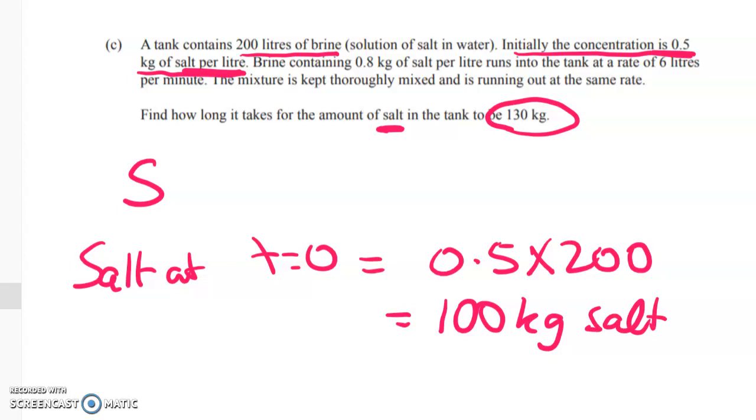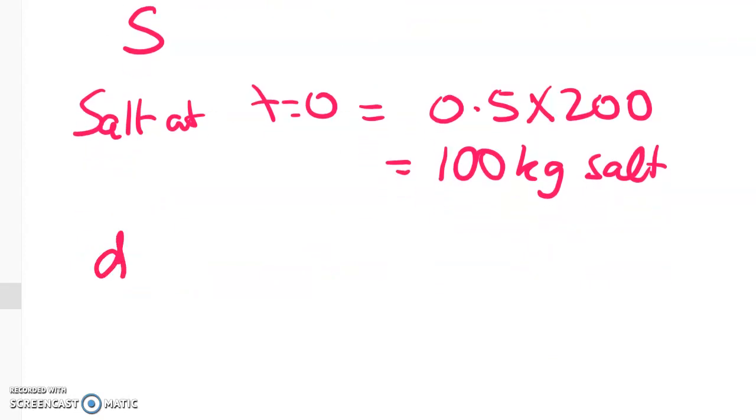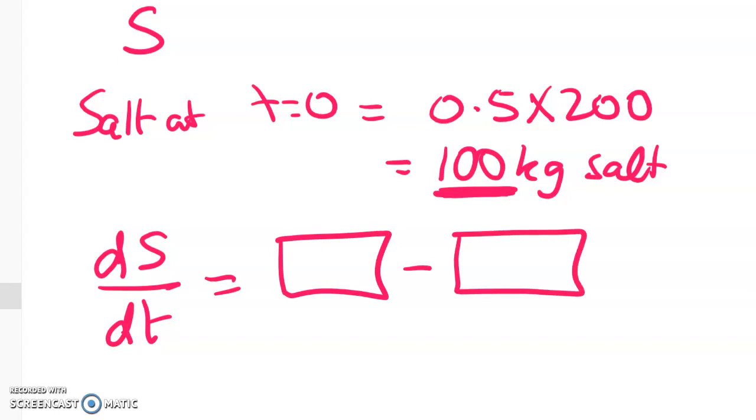Well, the brine is coming in at 6 litres per minute, and it's got a higher concentration of salt, but it's also going out at the same rate. Now, the stuff going out is going out from the whole tank, right? So we're trying to get an amount of salt. When is the amount of salt equal to 130 kilograms? And we can see that it started at 100. So the salt is going to go up over time, and we're solving for time. So we need to set up a DE, and it's going to be dS by dt, and it's going to have two bits. It's going to have a part for the salt coming in, and it's going to have a part for the salt going out.